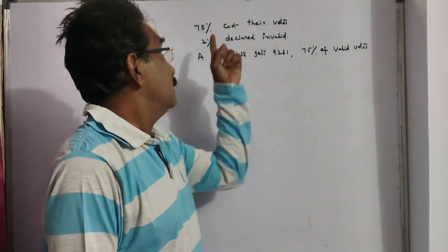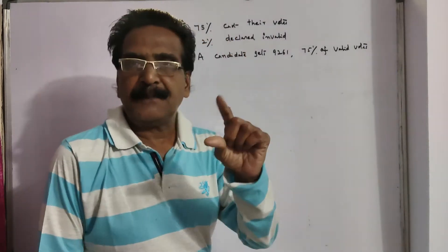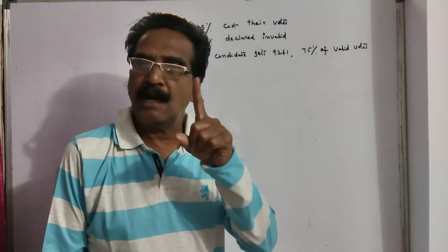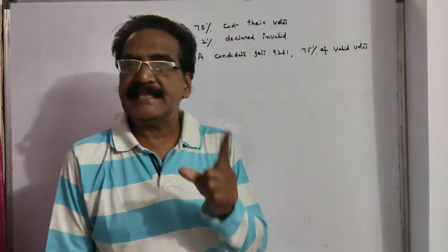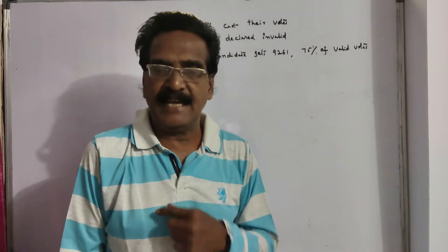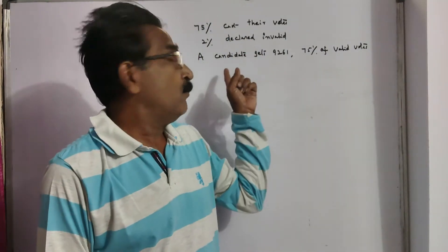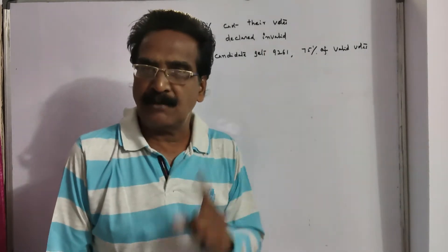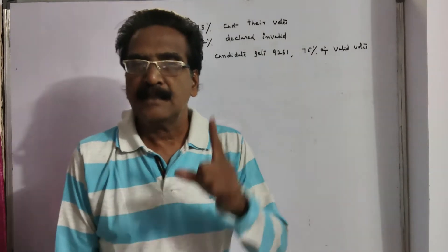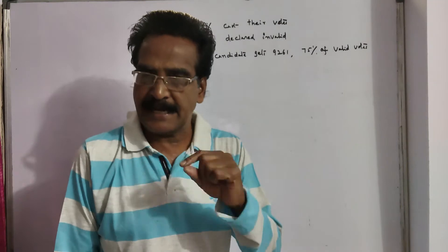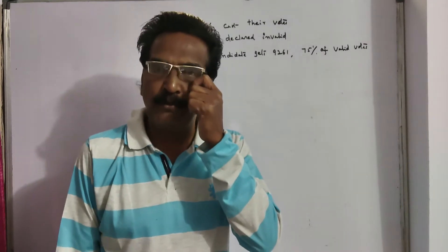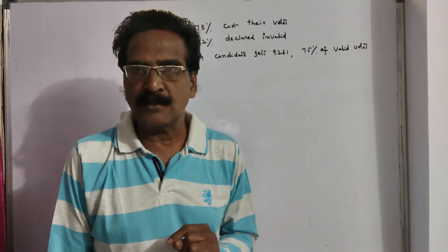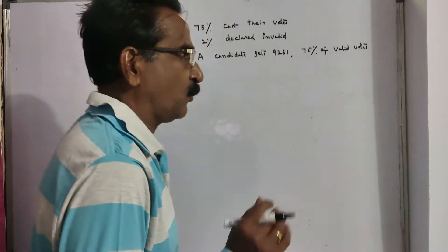Friends, in an election, 75% of the voters cast their vote, out of which 2% were declared invalid. A candidate gets 9,261 votes, and this 9,261 is equal to 75% of the valid votes. Then find the number of voters enrolled.